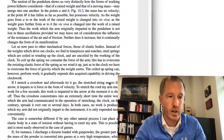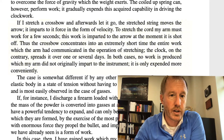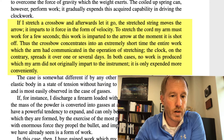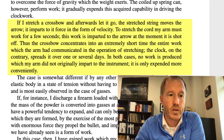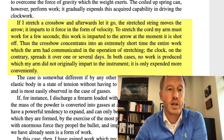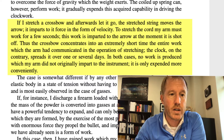After having talked about the pendulum, Helmholtz also talks about other ways that potential energy can be stored apart from lifting an object upwards. The first example he gives is the example of a drawn crossbow — he believes this is on page 116. He says: 'If I stretch a crossbow and afterwards let it go, the stretched string moves the arrow. It imparts to it force in the form of velocity. To stretch the cord, my arm must work for a few seconds. This work is imparted to the arrow at the moment it is shot off.'